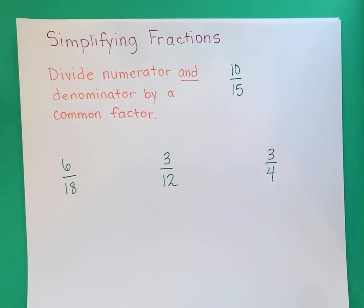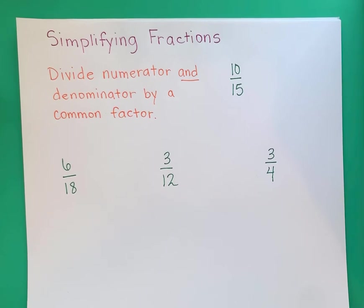Today we're going to talk about simplifying fractions. The way you simplify a fraction is you divide the numerator and the denominator by a common factor. The numerator is the top number of the fraction. The denominator is the bottom number of the fraction. A common factor just means something that they are both divisible by.